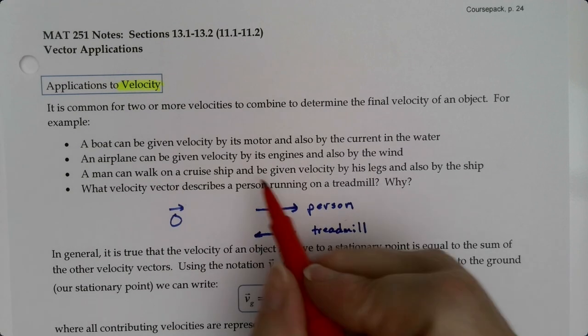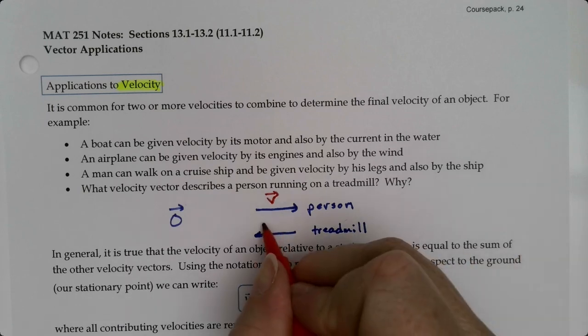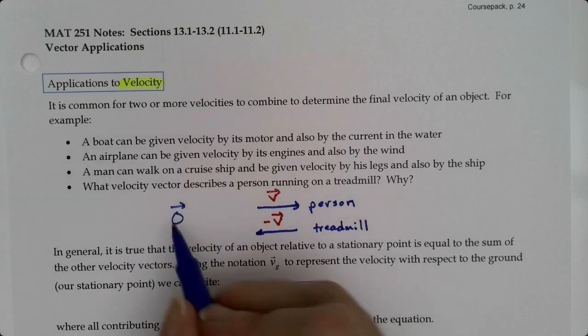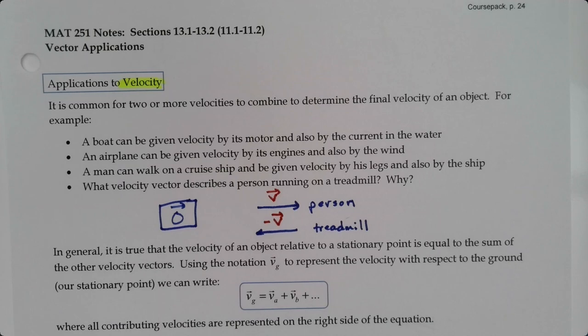If the person's moving at velocity v, the treadmill has to move at negative v, and that's why on the treadmill overall you have a velocity of zero. You don't go anywhere; you run in place for hours or minutes and you don't actually move to any particular location.